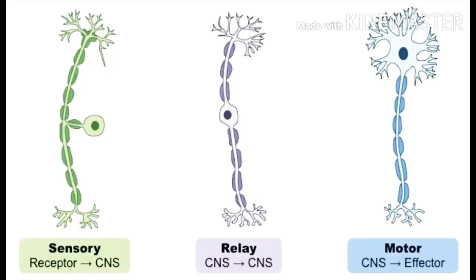Now let us look at the types of neurons. Neurons are of three types: sensory neurons, motor neurons, and relaying neurons. Sensory neurons are also called receptor neurons, because these are the neurons present on our sense organs.